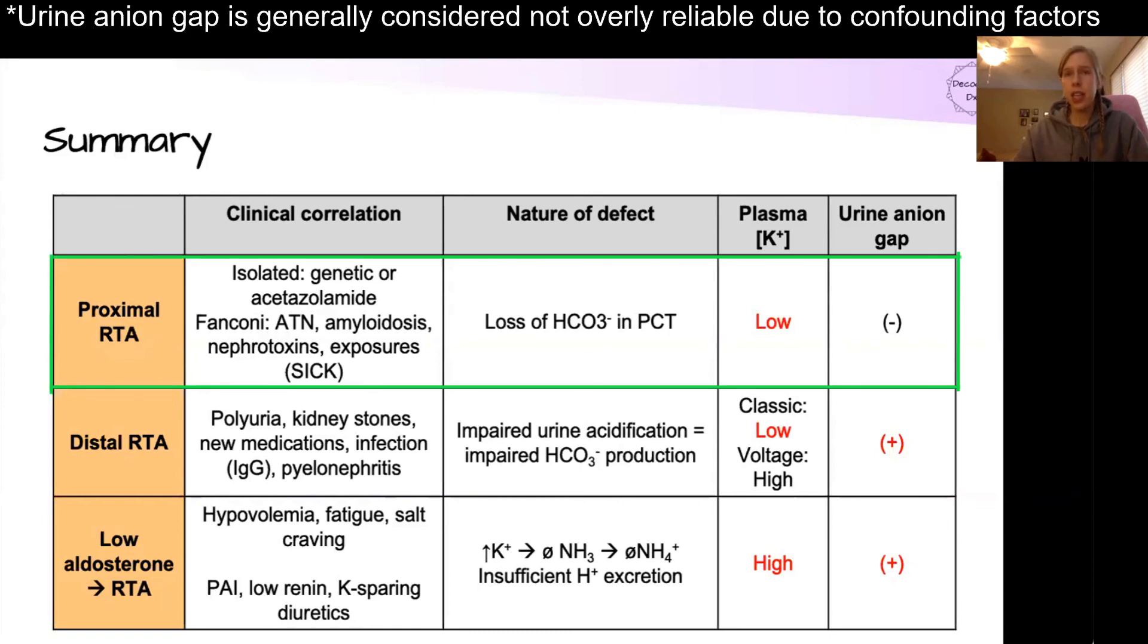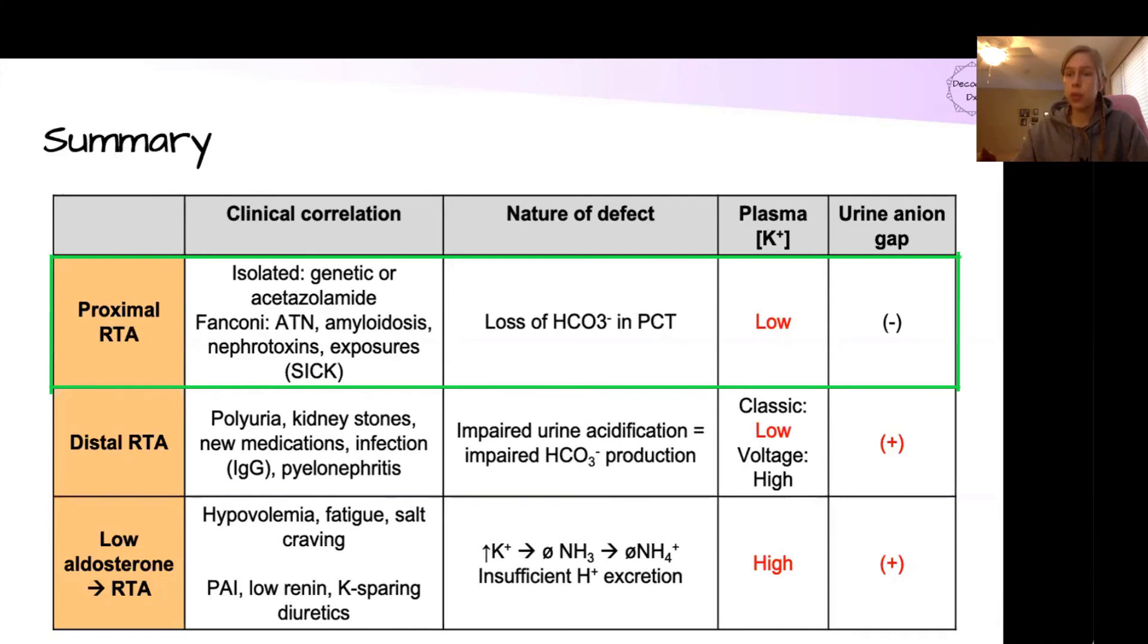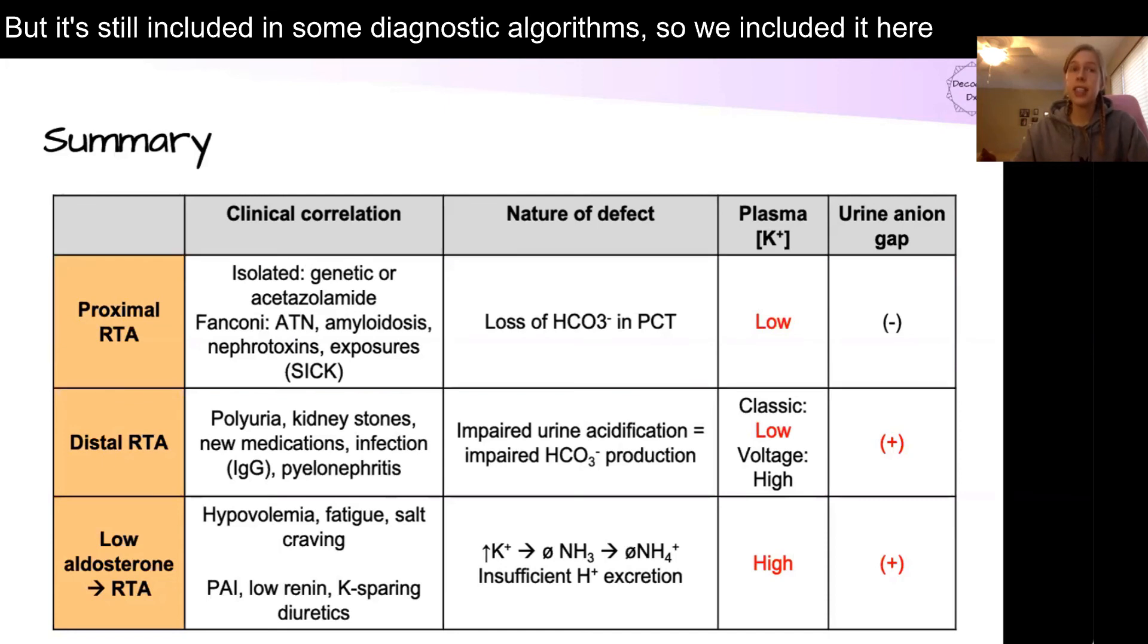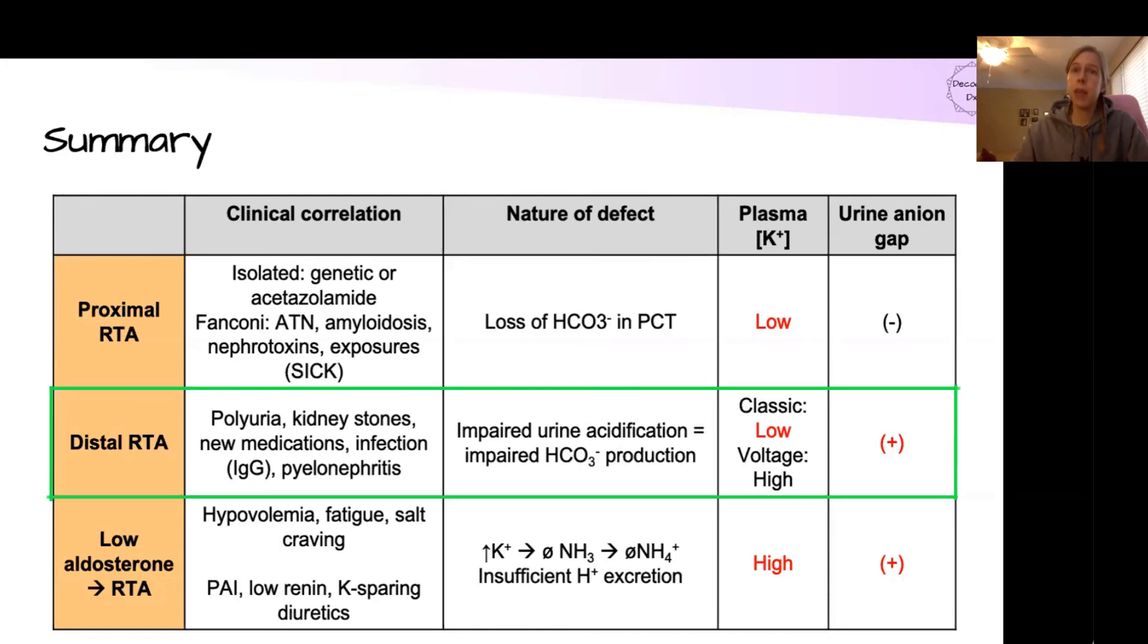All right, quick summary table. A proximal RTA is due to loss of existing bicarbonate in the proximal convolutubule due to a failure to reabsorb the bicarb that is filtered. You typically will have a low plasma potassium. A distal RTA comes from impaired urine acidification, which is directly tied to bicarbonate production. So if you can't acidify your urine, you can't produce excess bicarb, and therefore we have a metabolic acidosis. In classic distal RTA, you will be hypokalemic, but in voltage dependent, you'll be hyperkalemic. But it's important to know that classic is a lot more common.